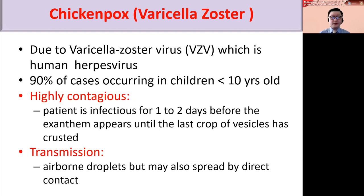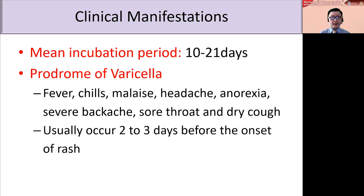First, let's look at chickenpox or varicella zoster. Chickenpox is caused by varicella zoster virus, which is a human herpes virus. 90% of chickenpox occurs in children less than 10 years old. It is highly contagious, and the patient is infectious for one to two days before the exanthem or rash appears until the last crop of vesicles has crusted. Transmission is mainly by airborne droplets but may also spread by direct skin-to-skin contact. The mean incubation period for chickenpox is 10 to 21 days, quite similar to monkeypox.